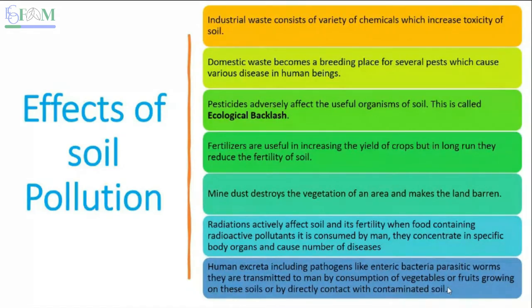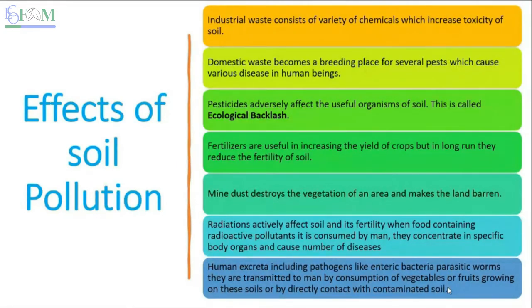The third source is pesticides that we apply in the ground or fields. For example, in apple orchards or paddy fields, we apply certain pesticides so that weeds can be controlled in paddy fields and diseases like scab, San Jose scale, and red mite can be controlled in apples.